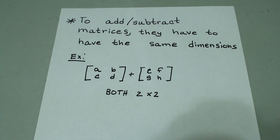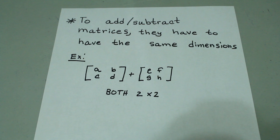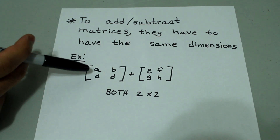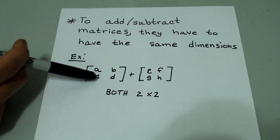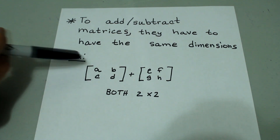To add or subtract matrices, they must have the same dimensions, meaning they must have the same number of rows and columns. For instance, both of these can be added because they're both 2 by 2.